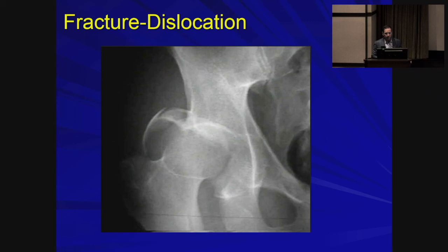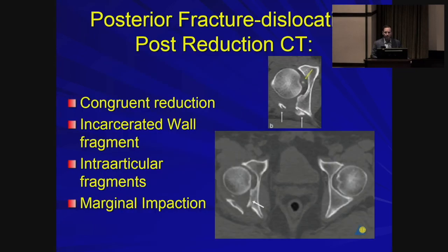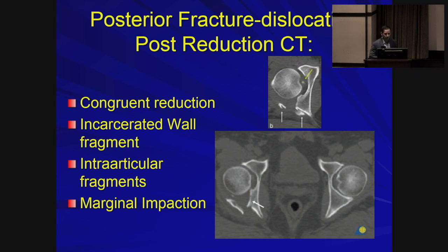A fracture-dislocation of the acetabulum merits immediate reduction — before suturing lacerations, before CT scan. The CT is important for preoperative planning, so reduction comes first. After reduction, look for a congruent reduction, rule out incarcerated wall fragments (if large, some consider this a surgical emergency requiring urgent ORIF), and look for intra-articular fragments that will need to be removed at surgery. For non-operative fractures with small intra-articular fragments, referral to a sports specialist for arthroscopic removal may be appropriate.